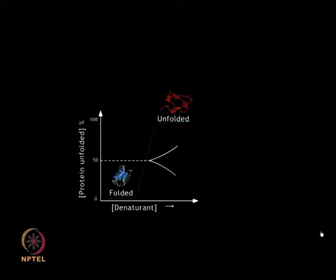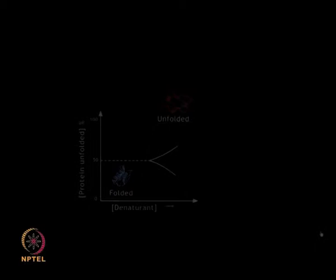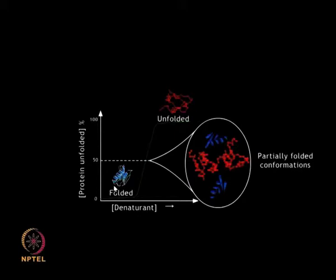On the x-axis, denaturants are plotted and on the y-axis the percentage of protein unfolded is plotted. At 0 percent you can see that is the totally folded form of the protein; at 100 percent it is the unfolded form. At a mixture of 50 percent, that is either unfolded or folded form, which shows that the protein can assume either folded or unfolded form.